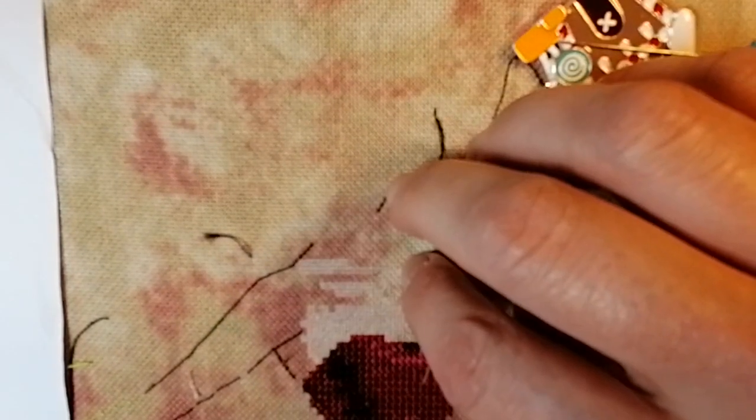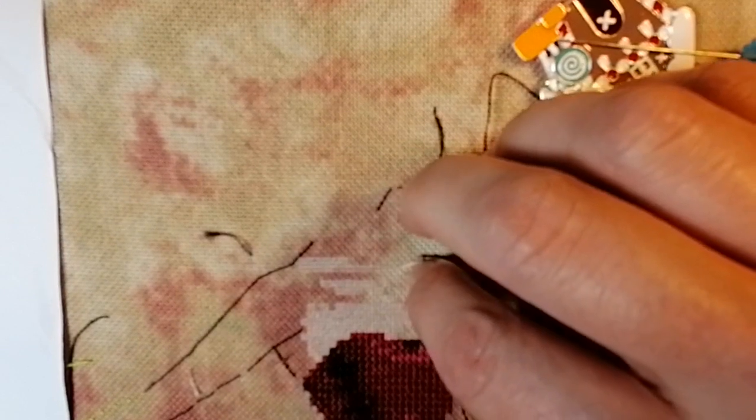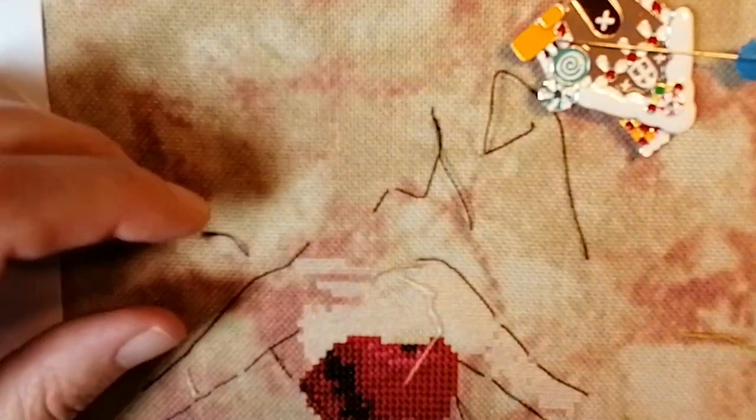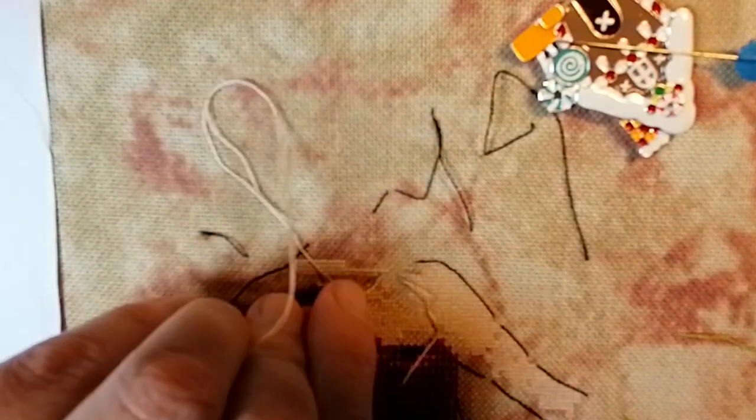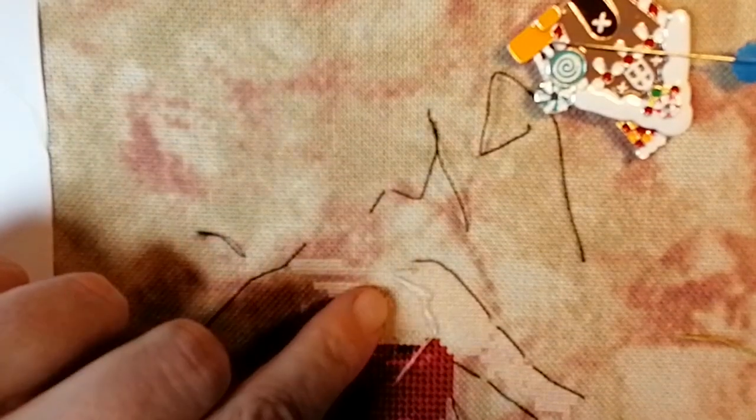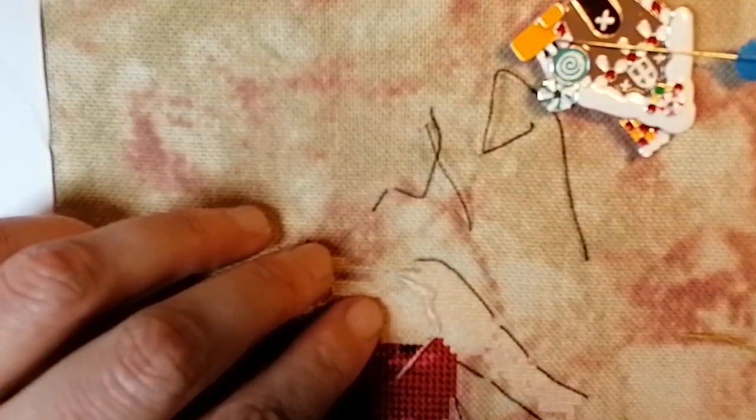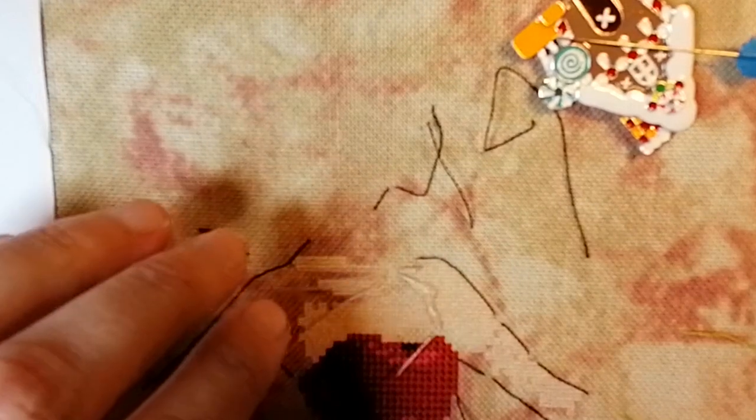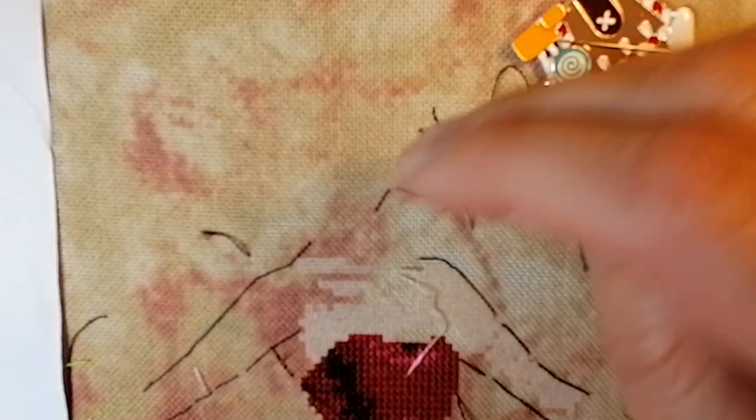The funny thing is that some people say that the dominant hand should be underneath because it will be easier. So when I try to have my left hand on top and my right underneath, it feels really strange. But I think if I would take my time, I think I would learn for sure, and maybe my stitching would be faster once I learned that. But not now. So yeah, let's just switch back to what feels comfortable and right.